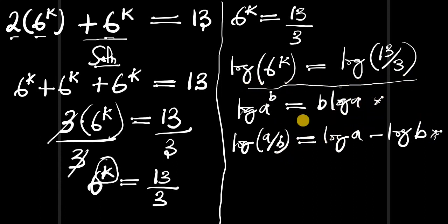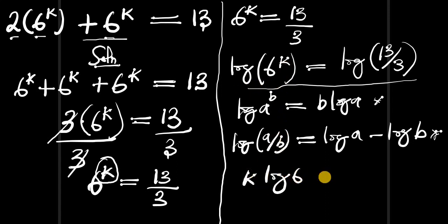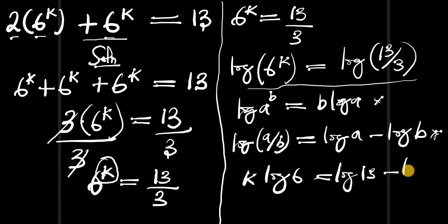Our new equation will become: instead of log of 6^k we write k times log of 6, and instead of log of 13/3 we write log of 13 minus log of 3.